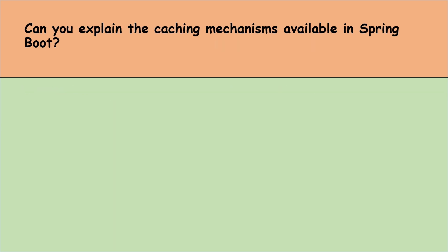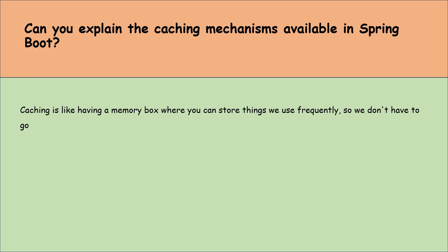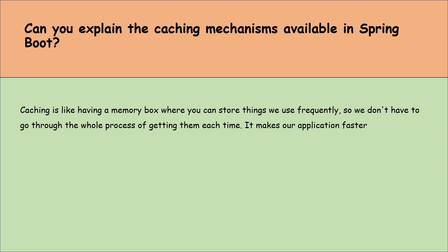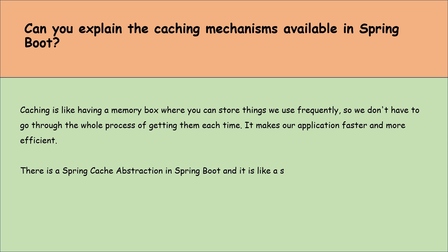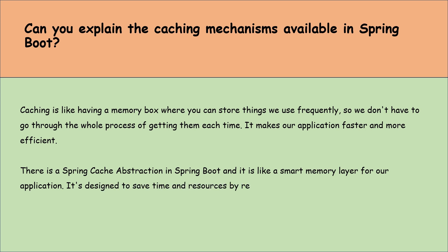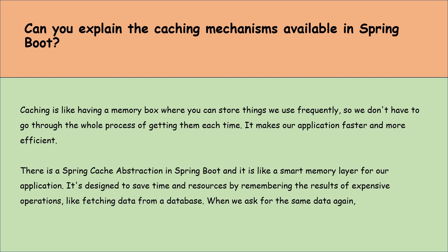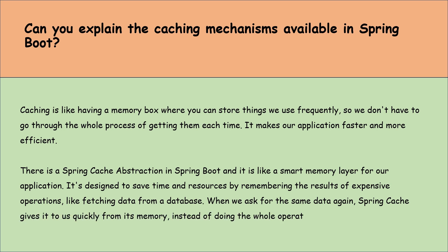Can you explain the caching mechanism available in Spring Boot? Caching is like having a memory box where we store things we use frequently, so we don't have to go through the whole process of getting them each time — it makes our application faster and more efficient. Spring Boot provides a Spring Cache abstraction, which is like a smart memory layer designed to save time and resources by remembering the results of expensive operations like fetching data from a database. When we ask for the same data again, Spring Cache gives it to us quickly from its memory instead of doing the whole operation again.